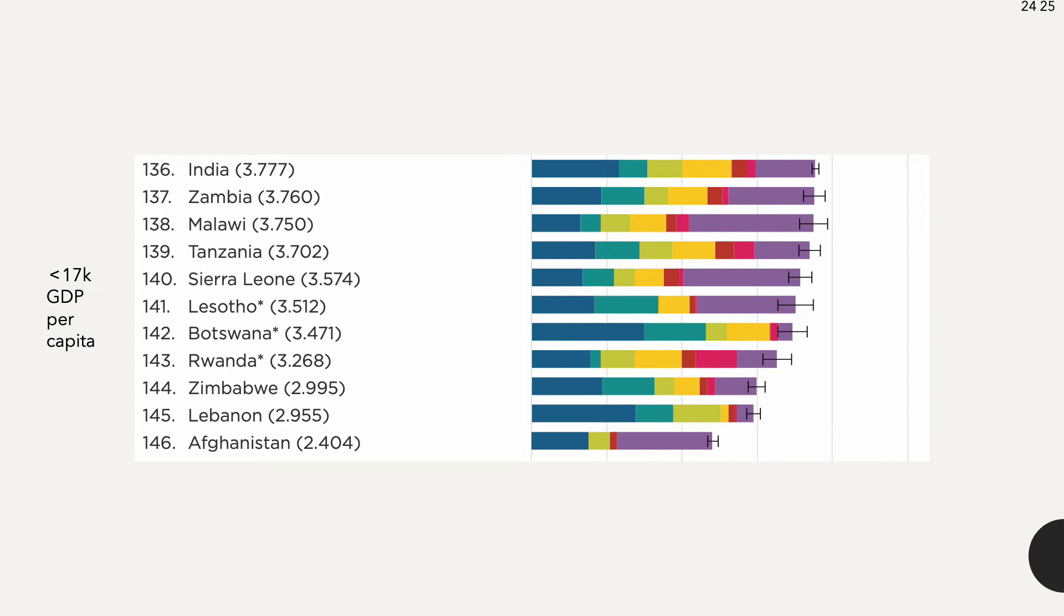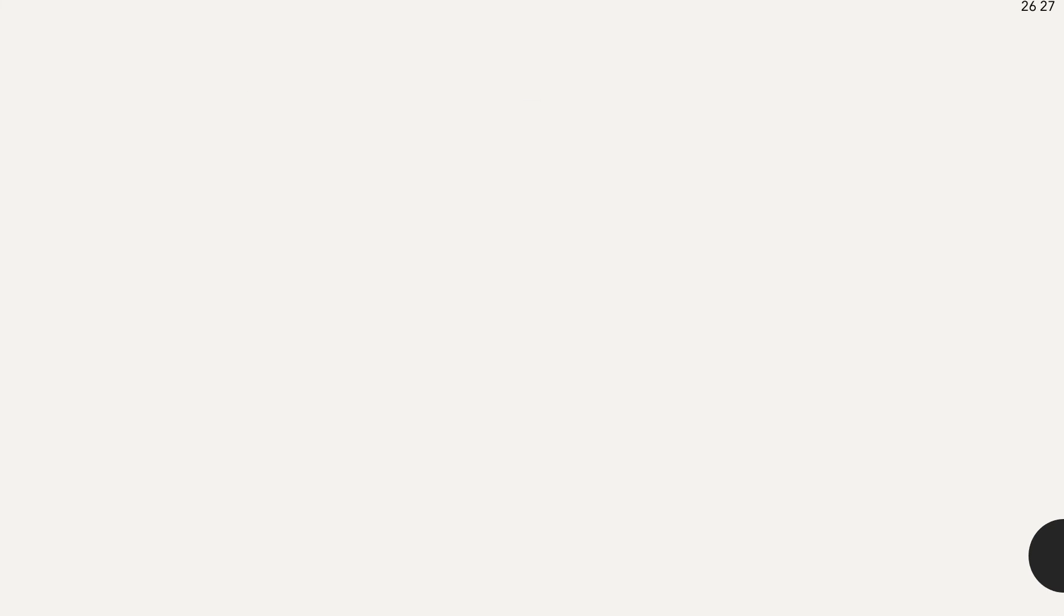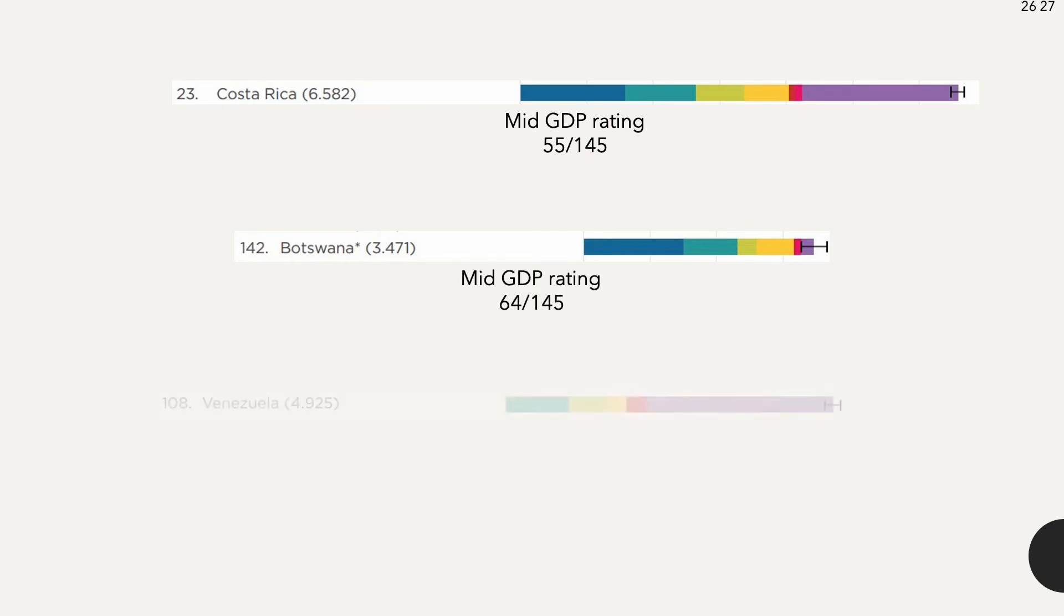A few other countries stood out. Costa Rica, with a high happiness ranking overall, has a mid-GDP rating. Botswana, with a low happiness ranking, has a mid-GDP rating. And Venezuela, being outside the lowest ranking group in regards to happiness, is last in GDP.